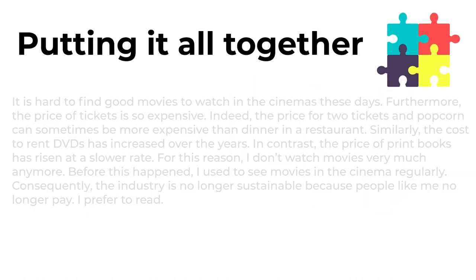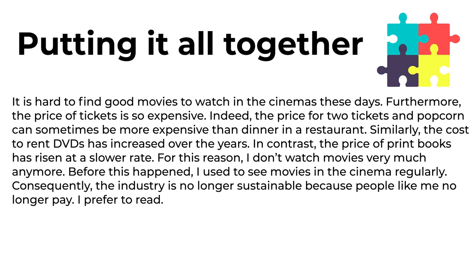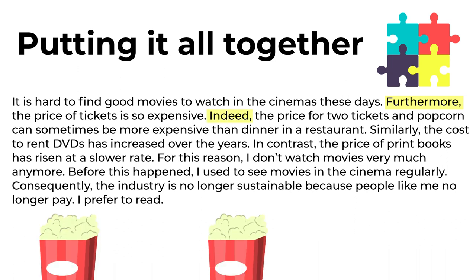Let's do a quick review. Here are all of our example sentences. When these sentences are combined to create a paragraph, the transition word signals the relationship between ideas to create a coherent paragraph. It is hard to find good movies to watch in the cinemas these days. Furthermore, the price of tickets is so expensive. Indeed, the price for two tickets and popcorn can sometimes be more expensive than dinner in a restaurant. Similarly, the cost to rent DVDs has increased over the years. In contrast, the price of print books has risen at a slower rate. For this reason, I don't watch movies very much anymore. Before this happened, I used to see movies in the cinema regularly. Consequently, the industry is no longer sustainable because people like me no longer pay. I prefer to read.